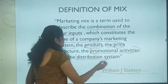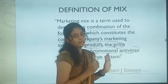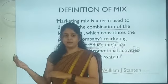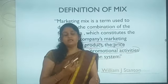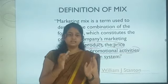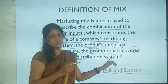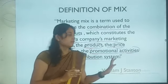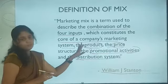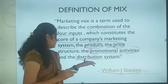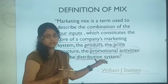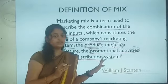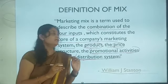You have to select promotional activities suitable to your target customers. Then you have to take decisions regarding the distribution system — at which place and in which market to sell the product. The distribution system refers to decisions regarding place. So, the four inputs are product, price, place (which is the distribution system), and promotional activities. This is the definition given by William J. Stanton.